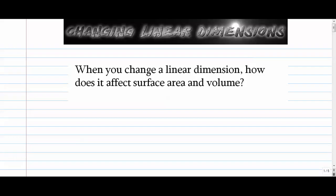In this video we're going to take a look at what happens to surface area and volume when you change a linear dimension. When we say linear dimension we mean something like a radius, a height, a side length, or something like that. You'll find out that it changes surface area and volume in interesting ways.